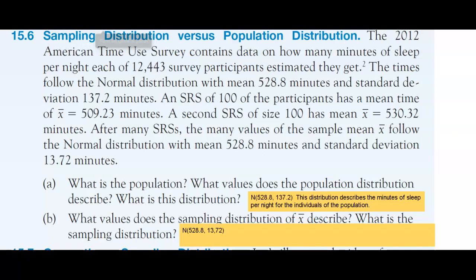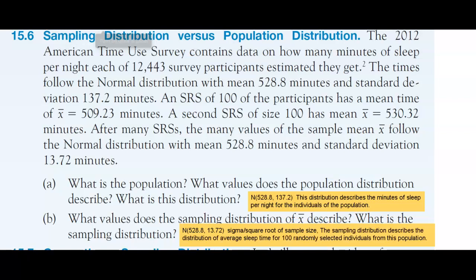But now the difference is that we have 13.72 for our standard deviation. To find that, you take sigma and divide by the square root of your sample size. In this case, they took 137.2 and divided it by the square root of 100, because that's the sample size. Square root of 100 is 10, so that's why we get 13.72. What the sampling distribution describes is the distribution of average sleep time for 100 randomly selected individuals from this population.